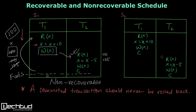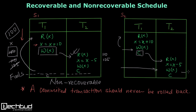Now let's look at schedule S2. Here, before transaction T2 reads the value of X, T1 is already committed. So T2 is reading a committed value. Even if a failure occurs at some point, T2 hasn't read anything yet and can simply roll back and restart with no problem. There is no chance of inconsistency, making this a recoverable schedule.